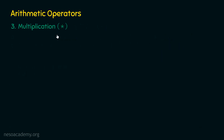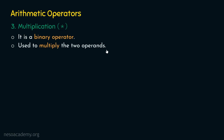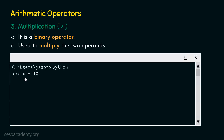The multiplication operator is denoted by star. It is a binary operator used to multiply two operands. For example, let's type x equal to ten and y equal to twenty, then type x times y. Since x points to ten and y points to twenty, ten times twenty gives us two hundred. After hitting enter, we get two hundred as a result.